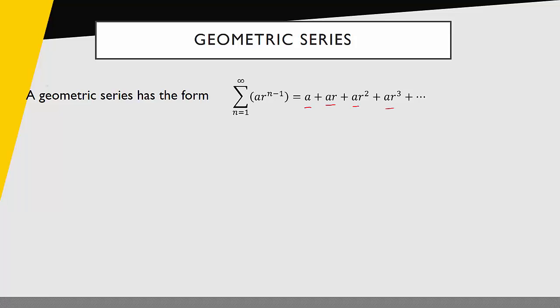The first thing we have to be able to do is, given some series, can we recognize it as being geometric? And if it is, can we rewrite it in sigma notation? So let's look at an example. Say I have this series: 3 plus 2 plus 4 thirds plus 8 ninths plus 16 twenty-sevenths plus dot dot dot. Is this geometric? The big idea is that we're just multiplying by r. If I take one term and divide it by the previous term — that's ar divided by a — I would get r.